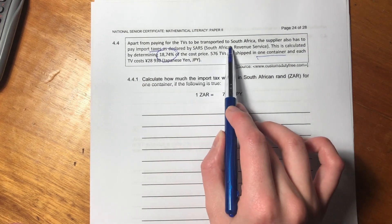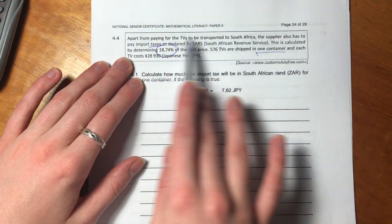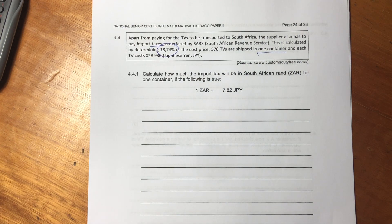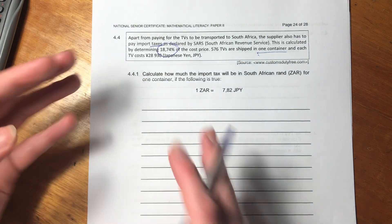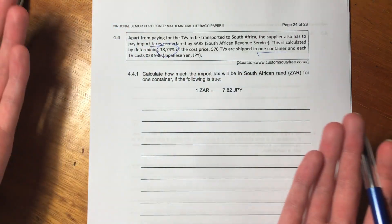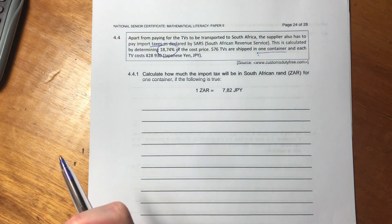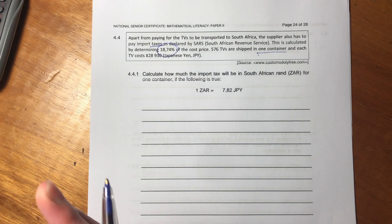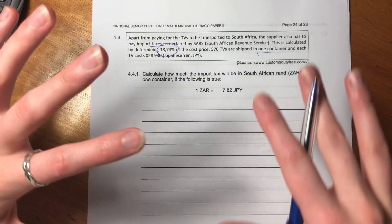Let's just go through it methodically and I'm sure we can do it. So it says apart from paying for the TVs to be transported to South Africa, the supplier also has to pay import taxes as declared by SARS. SARS is the South African Revenue Service, right? They collect tax. This is calculated by determining 18.74% of the cost price. 576 TVs are shipped in one container and each TV costs 28,930 yen.